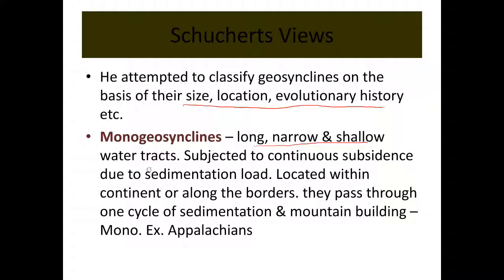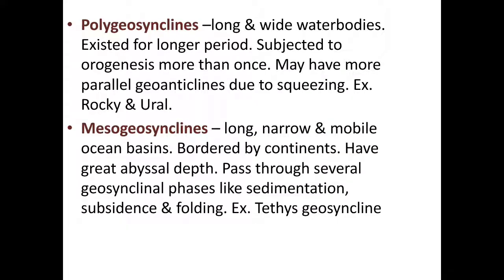The first type is mono geosynclines — long, narrow, and shallow water tracts that are subjected to continuous subsidence due to sedimentation load. They are located within a continent or along its borders and pass through only one cycle of sedimentation and mountain building. 'Mono' means one cycle. Example: the Appalachian Mountains.